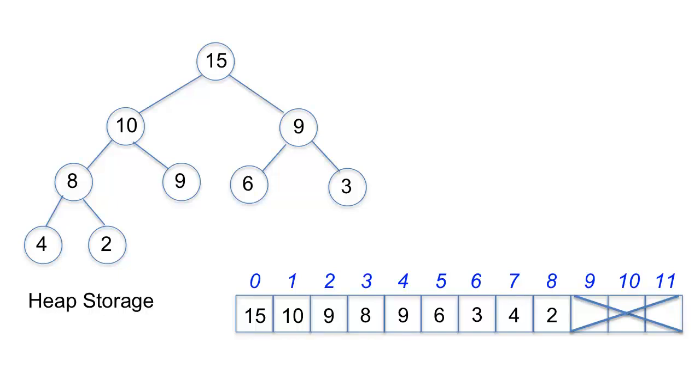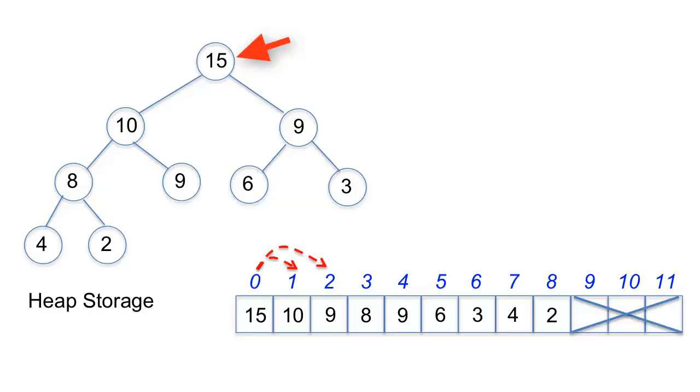So you're probably saying, this is all well and good. But how do you find the parent of an item for sift up, or the children for sift down, in a flattened array structure? Let's find out. The top of the heap 15 is at index 0 in the array. Its children are at indices 1 and 2. Its right child 9, which is at index 2 in the array, has children at indices 5 and 6. And the item 8, which is the left child of 10 in the heap, and at index 3 in the array, has children at indices 7 and 8. There is a pattern here.